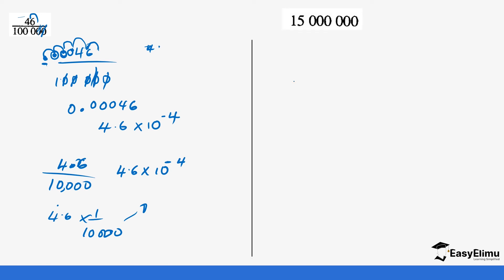For this large number, we move the decimal to the left to get a positive standard form: one, two, three, four, five, six, seven times. We get 1.5 times 10 power 7.